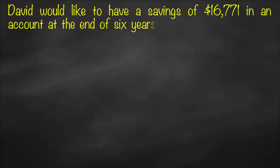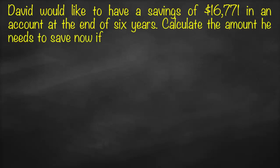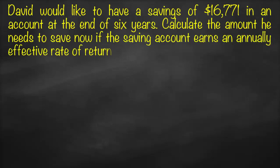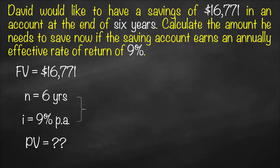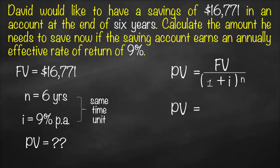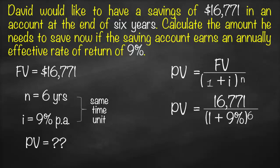David would like savings of $16,771 in an account at the end of six years. Calculate the amount he needs to save now if the account earns an annually effective rate of return of 9%. Variables: FV = $16,771, n = 6 years, i = 9% per annum. Since time and interest share the same unit, present value equals 16,771 divided by (1 plus 9%) to the power 6, giving a present value of $10,000.